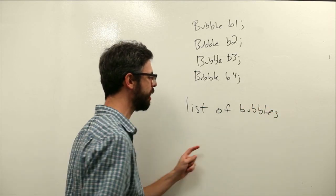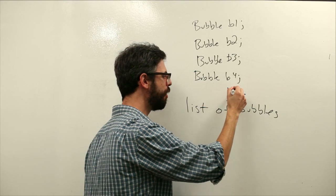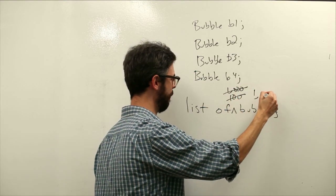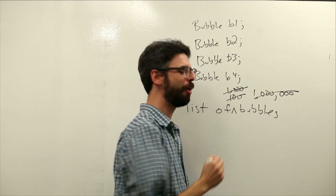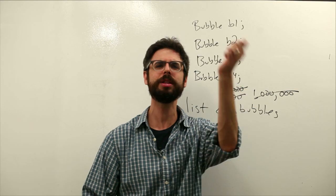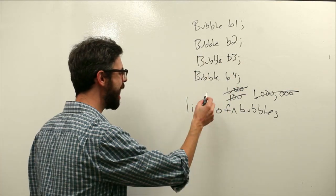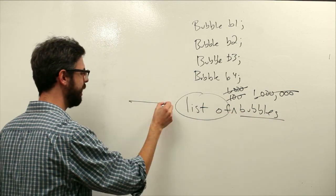I want to just say in one statement I want to have a list of 100 bubbles or 1,000 bubbles. I want to be able to have as many bubbles as I want and I want to be able to say that in one line of code. That's a list of something. A list of data is an array.